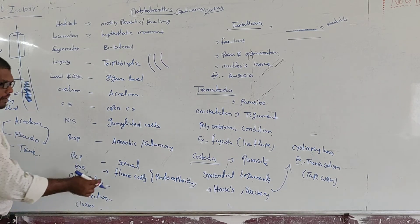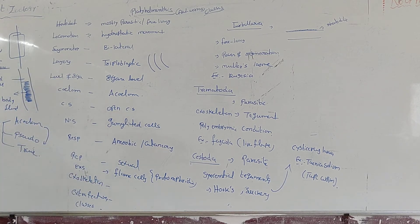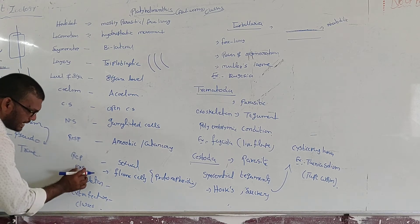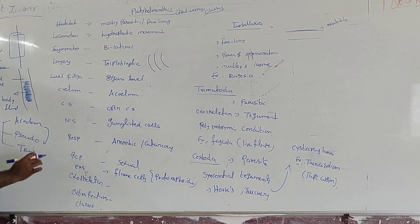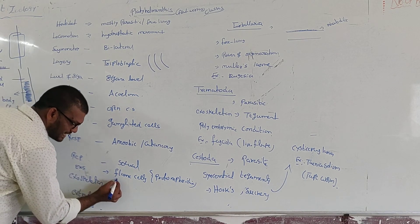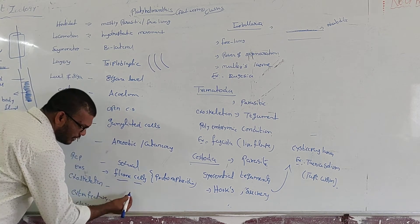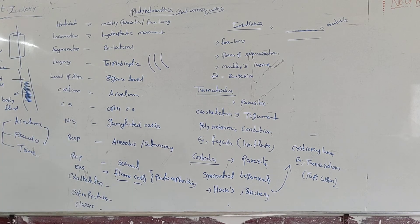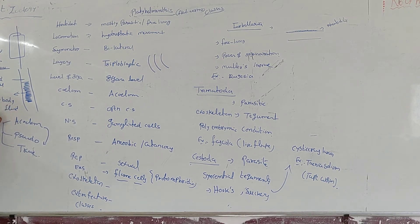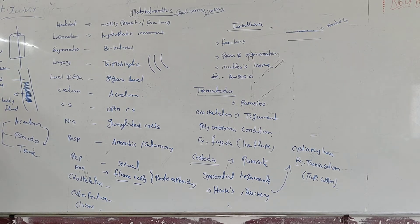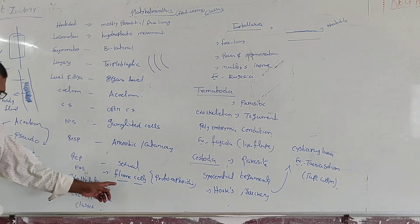Reproduction is mostly sexual. Now, the excretory system — very important — the excretory cells are the flame cells. They are named flame cells because when they collect nitrogenous waste material, they flicker like a flame. That is why they are called flame cells.